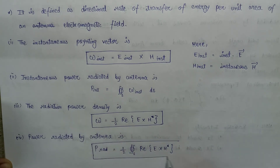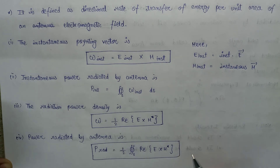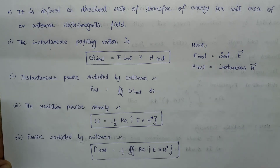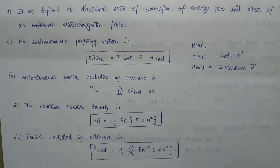So these are the two mathematical representations which we derived, and this is all about the radiation power density and the power radiated by the antenna.